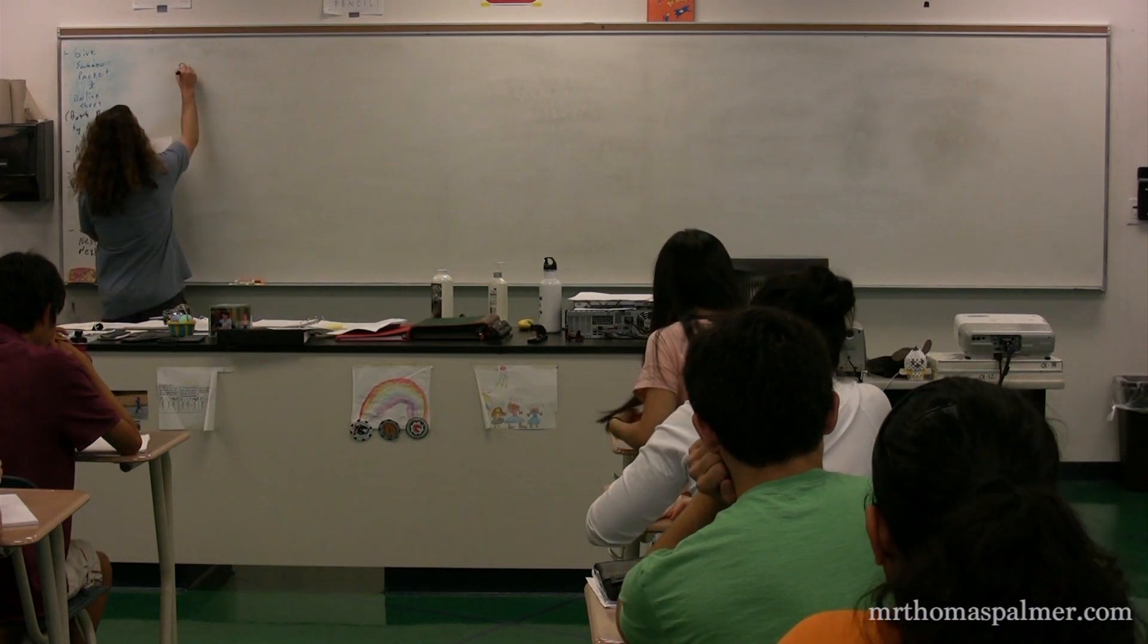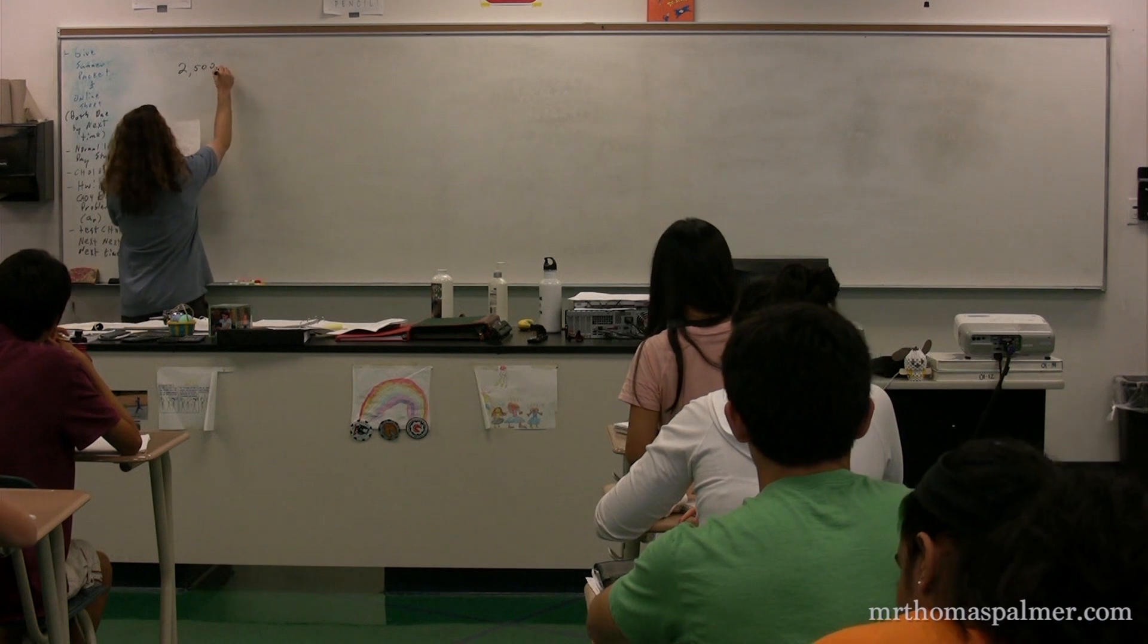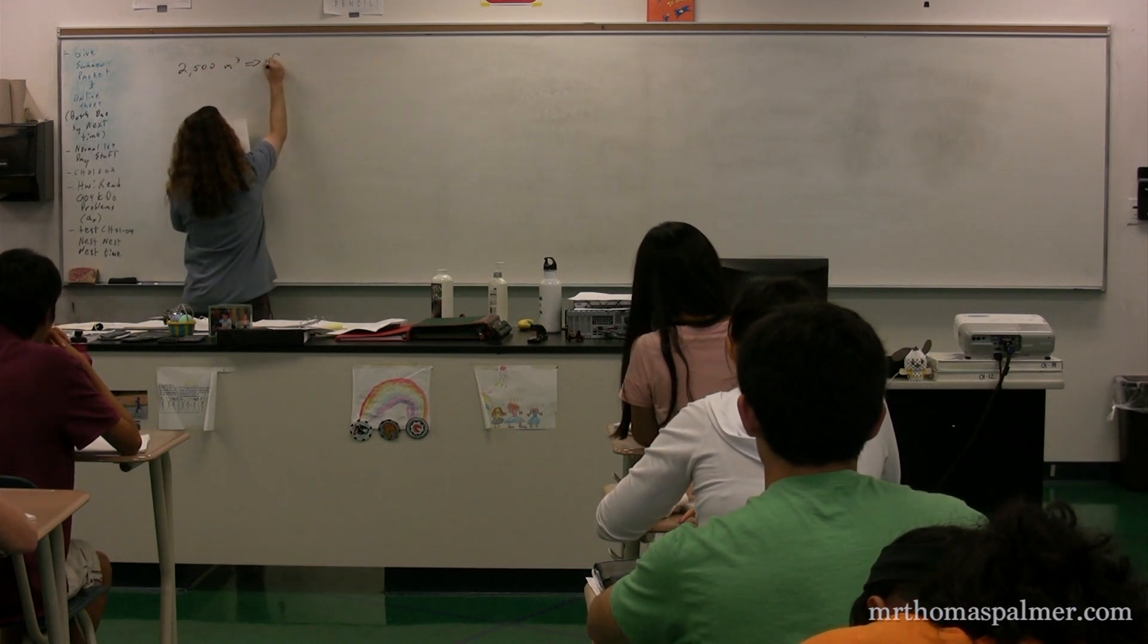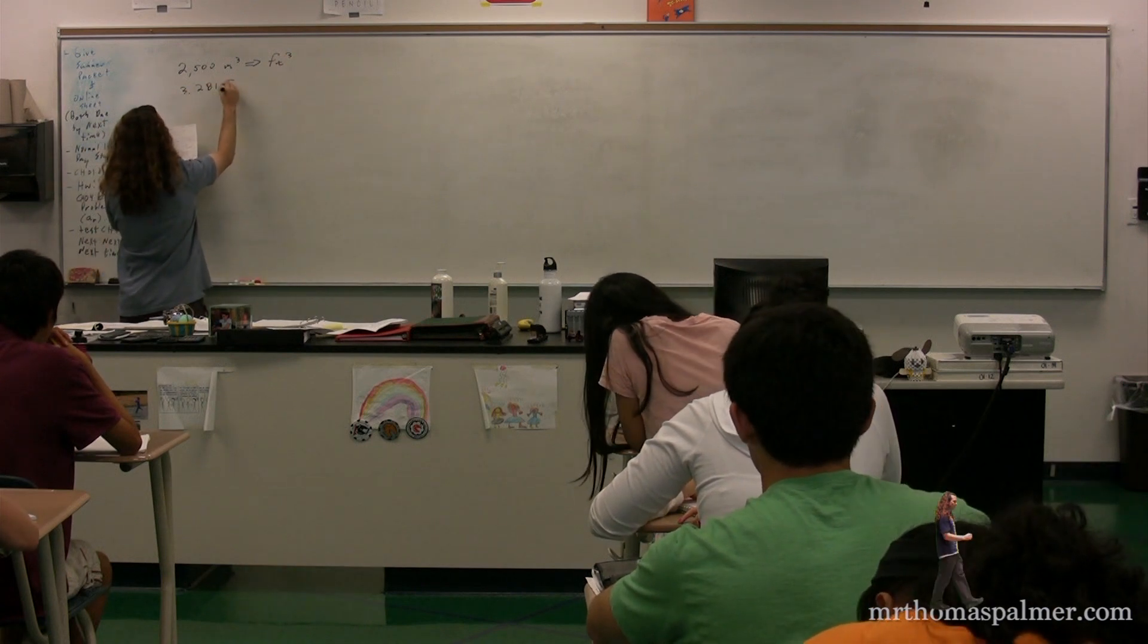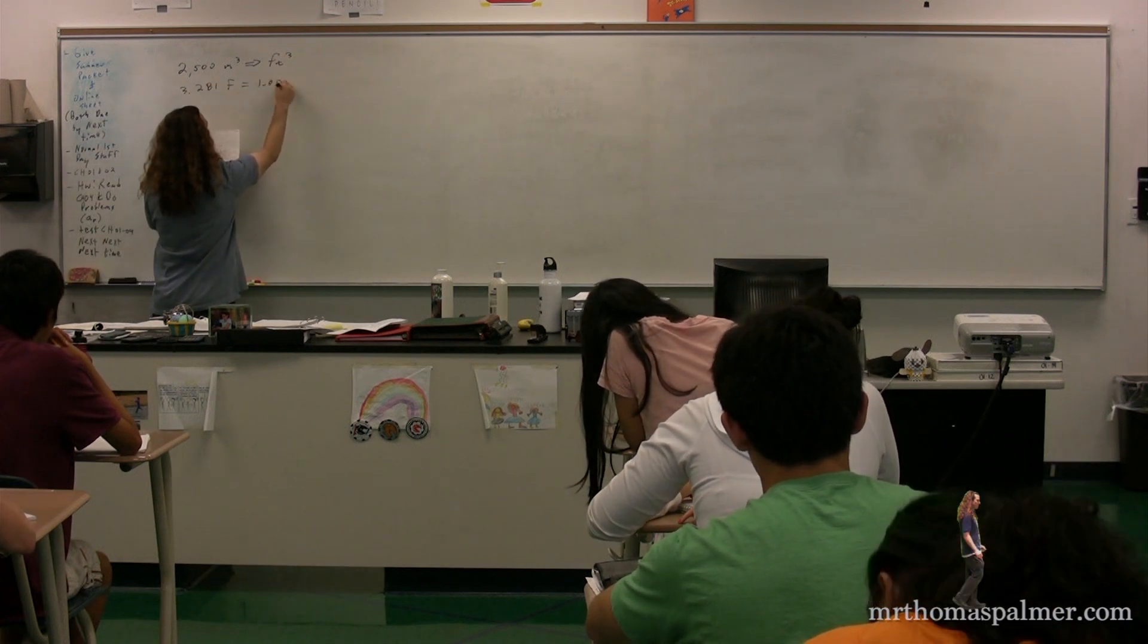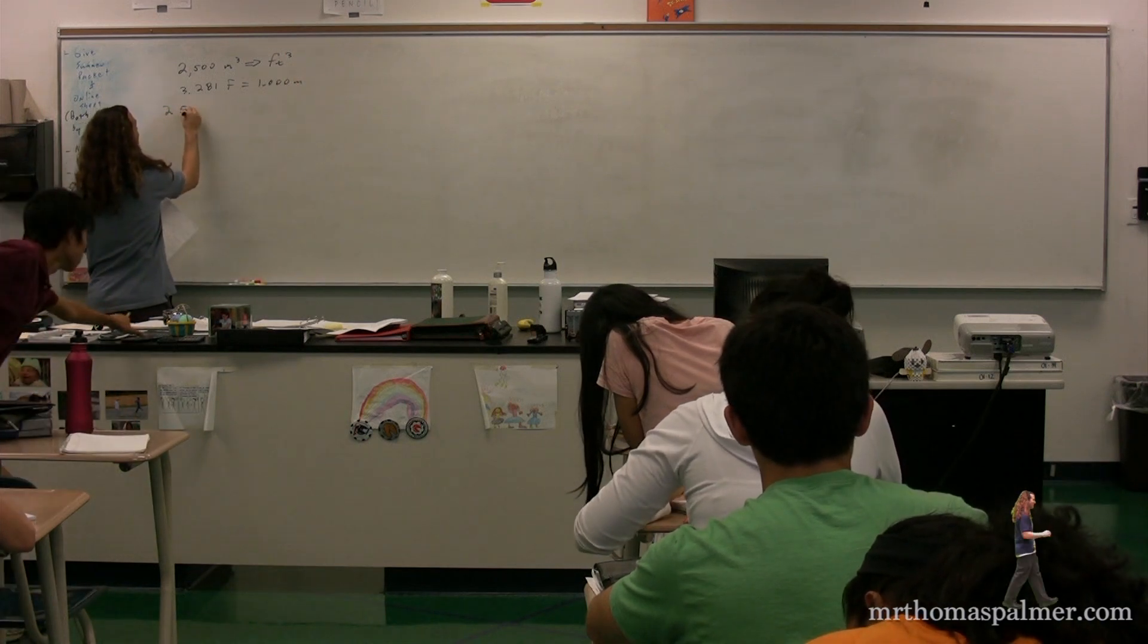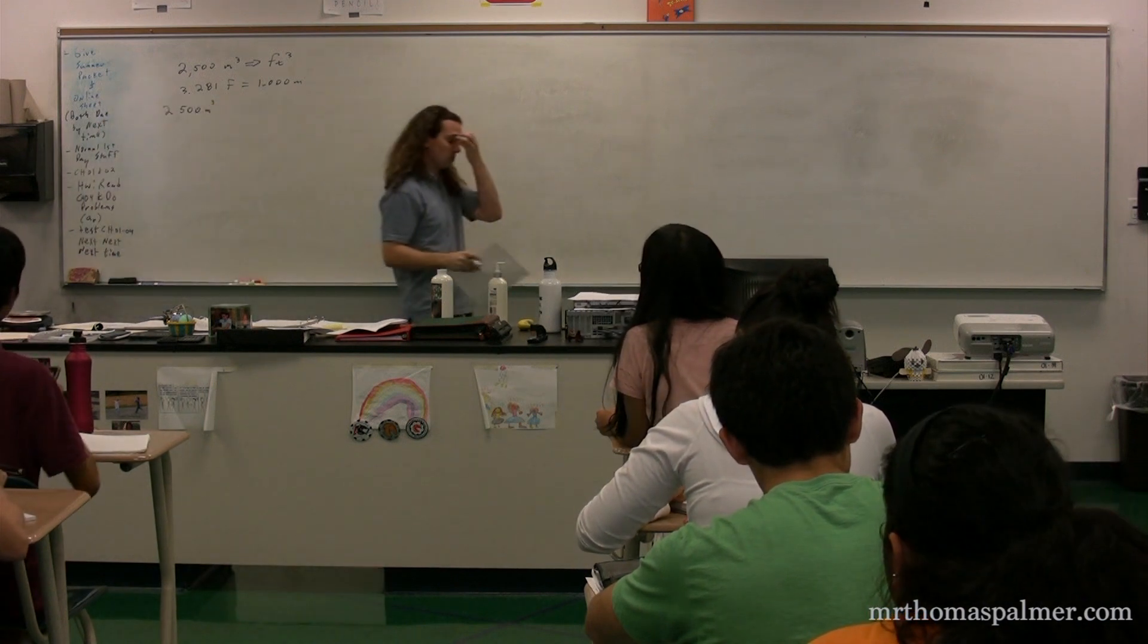Let's start with 2,500 meters cubed. We're going to convert that over to feet cubed knowing that 3.281 feet is equal to 1.00 meters. So please convert 2,500 meters cubed into feet cubed.